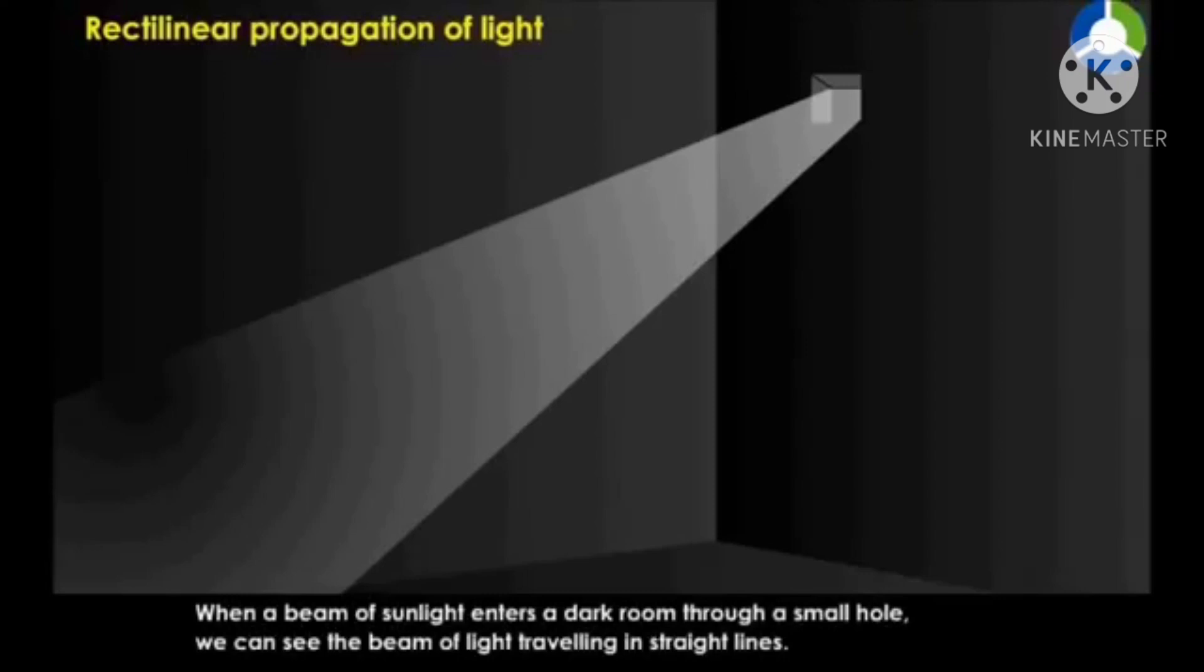When a beam of sunlight enters a dark room through a small hole, we can see the beam of light traveling in straight lines.